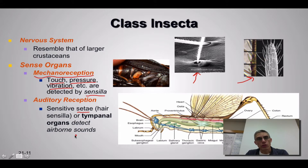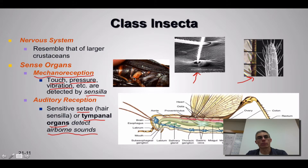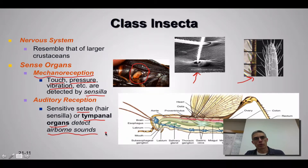Insects that don't have sensitive cilia may have what's called a tympanal organ. You'll be able to see these in the grasshoppers in lab, and you can see this tympanal organ right here. It's used to pick up auditory stimuli from the environment.